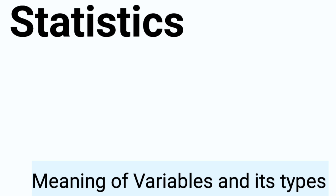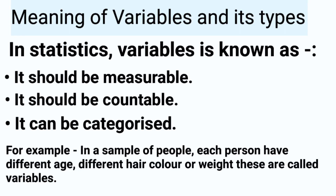Welcome students. In this video we will talk about statistics today — about variables and their types. What are the variables? There are two types: the first is continuous variable and the second is discrete variable.